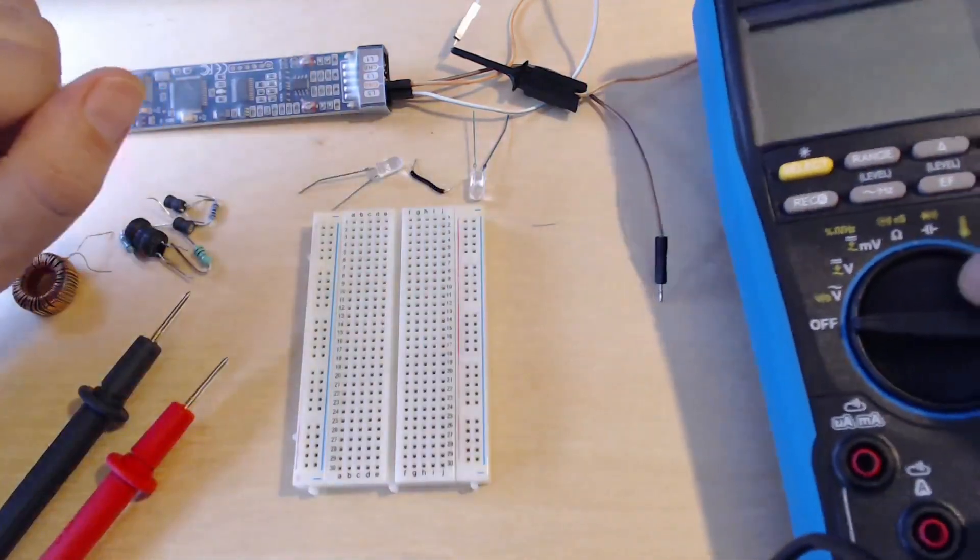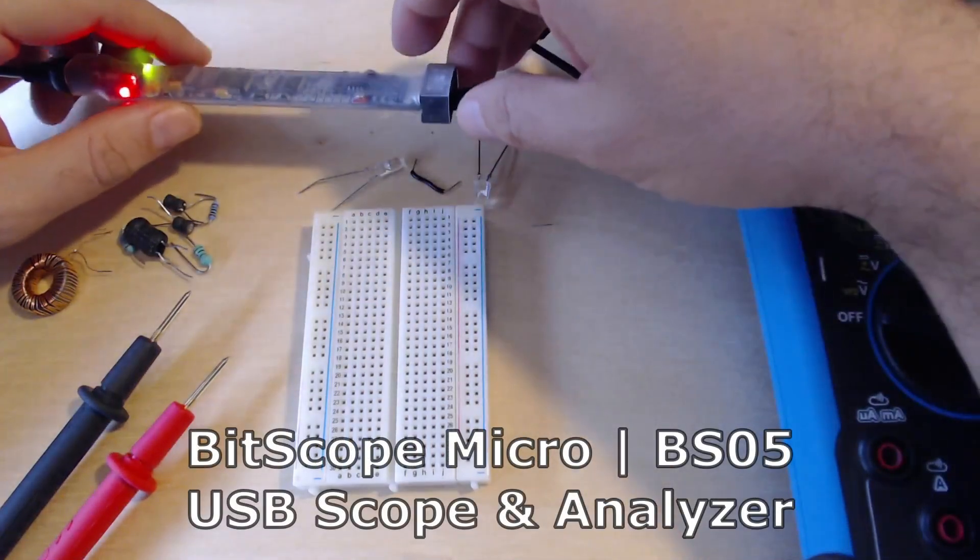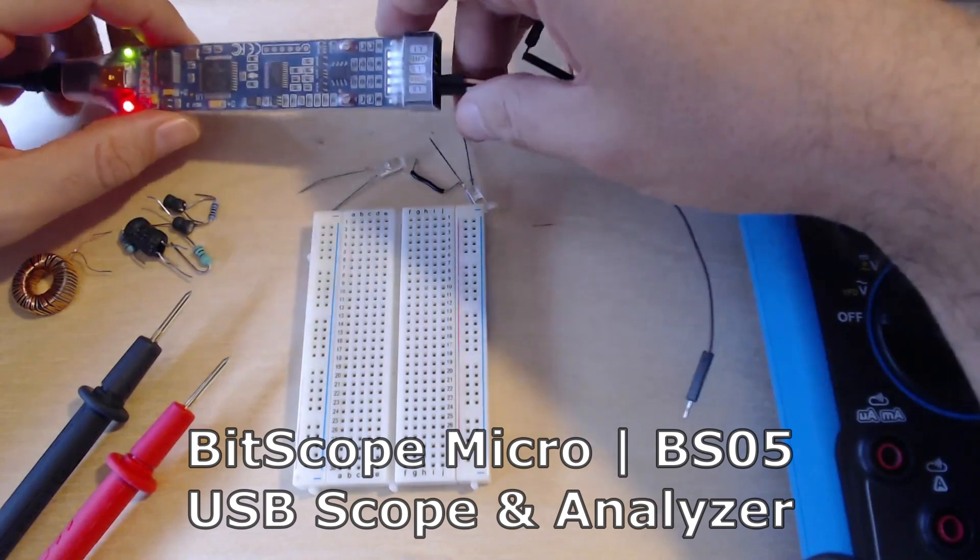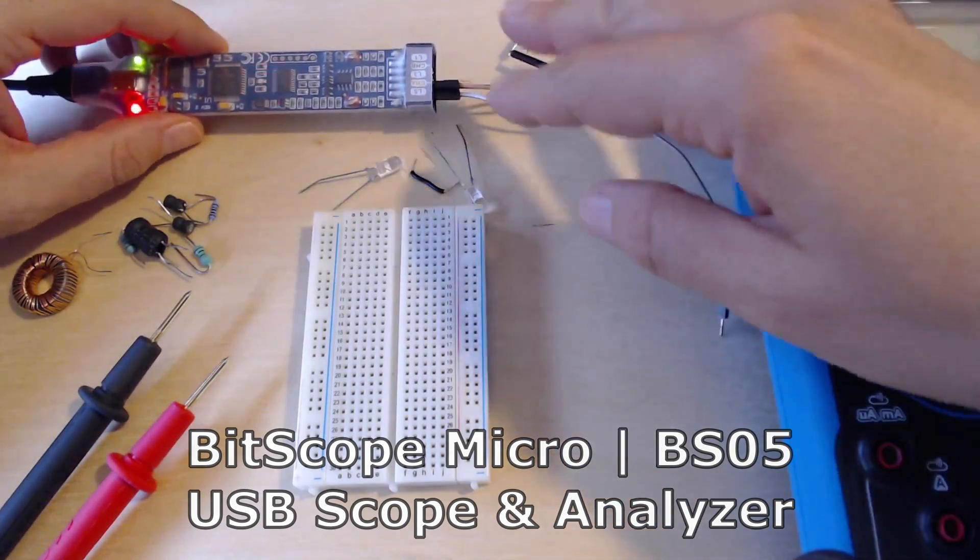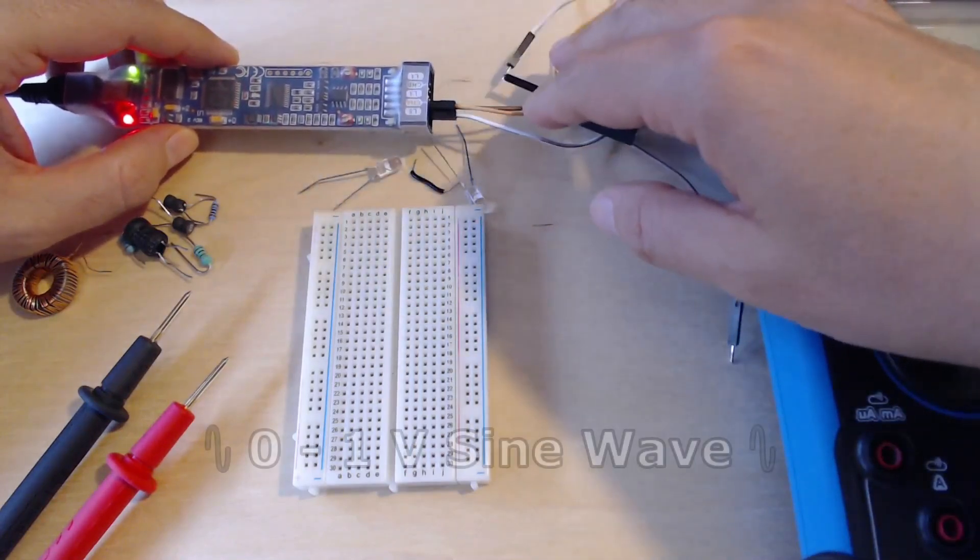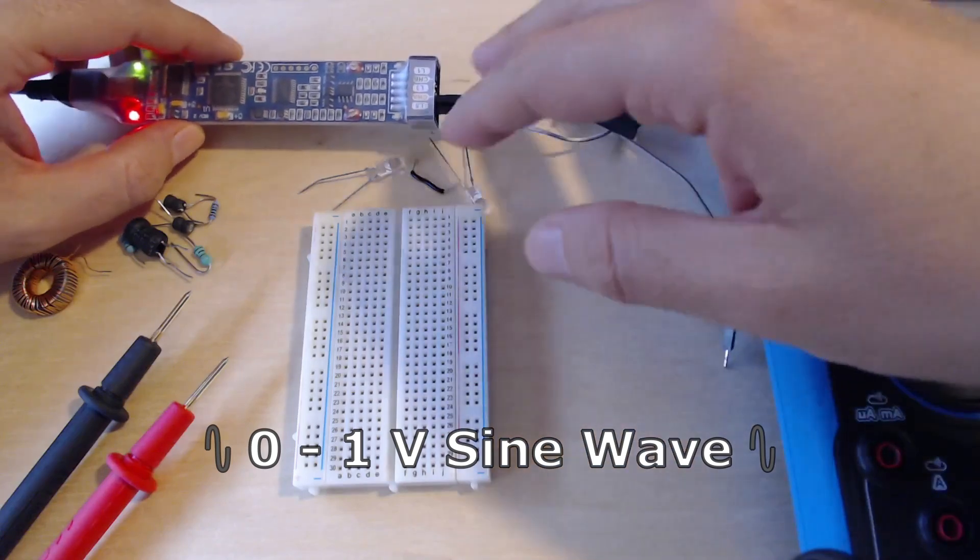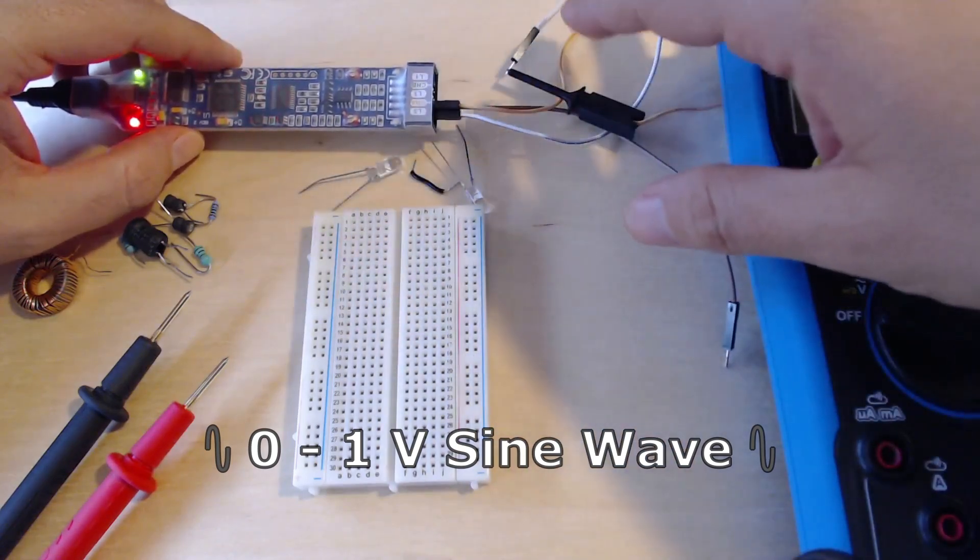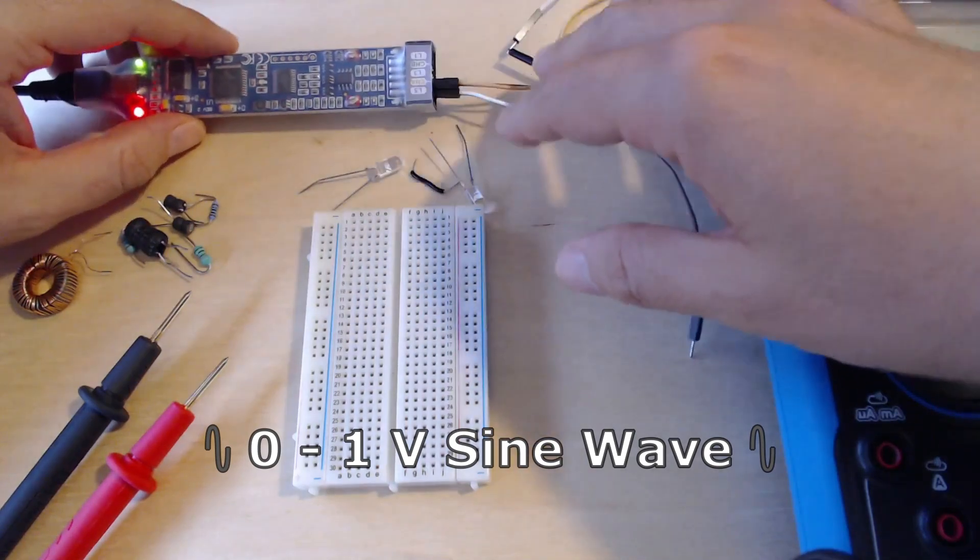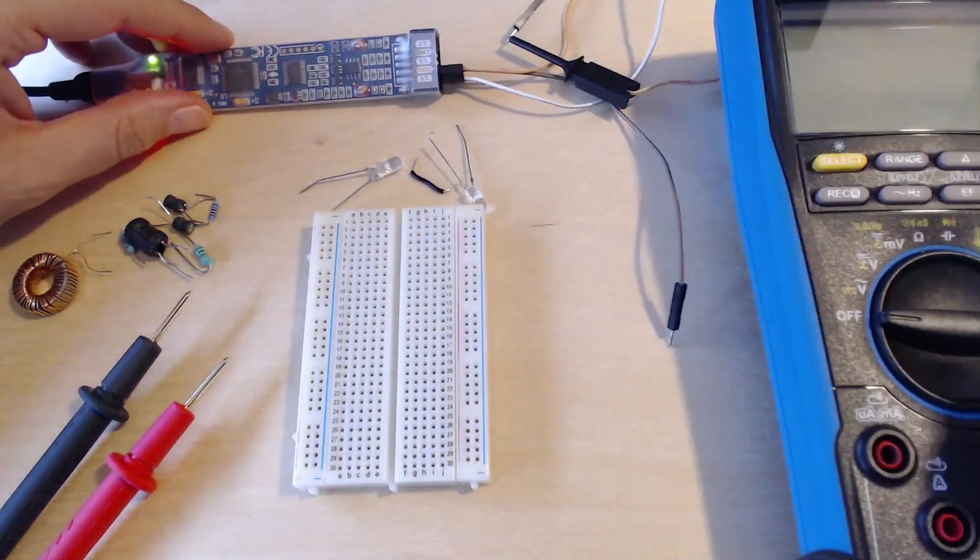On the signal generator front, I have a USB Bitscope Micro USB here which has an arbitrary waveform generator. All we need from the signal generator is a one volt peak-to-peak 10 kilohertz sine wave. So as long as you have anything that can generate a sine wave at one volt at around 10 kilohertz, that's good enough. You can build your own signal generator - it's a good beginners electronics project as well, or you can use something cheap off the shelf.